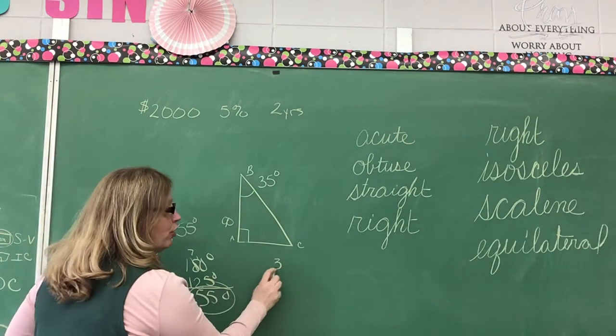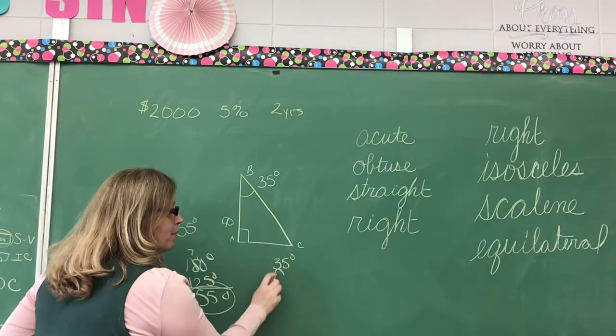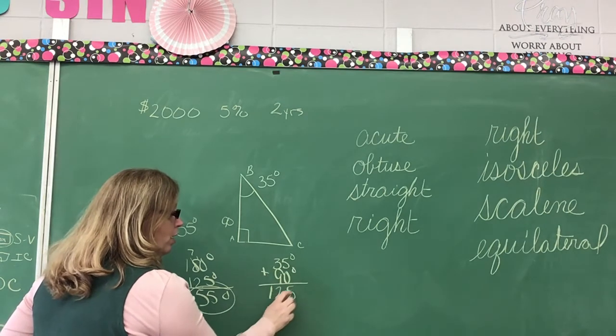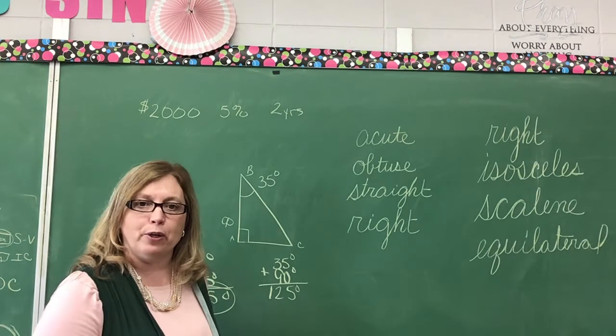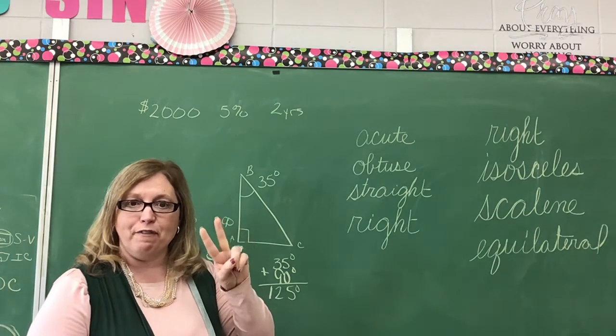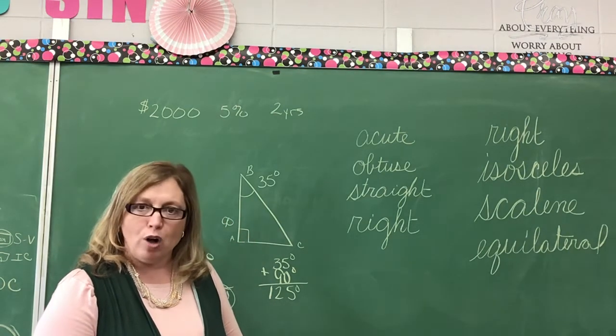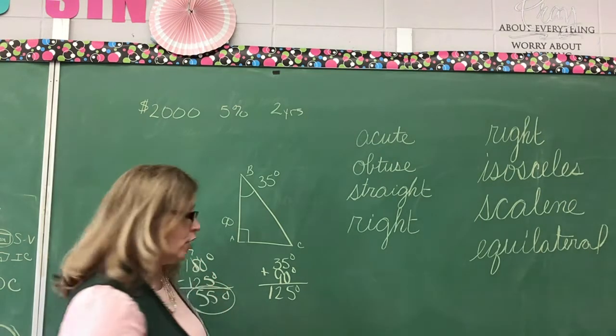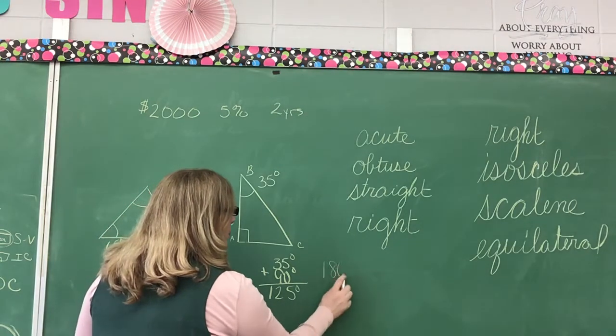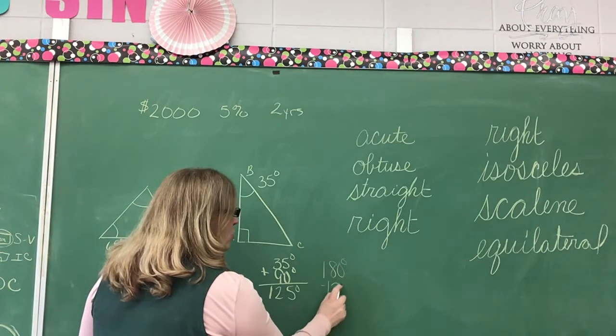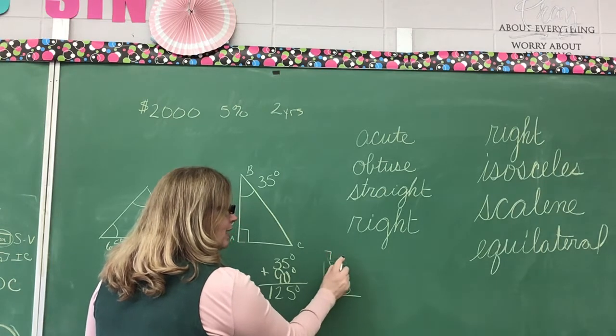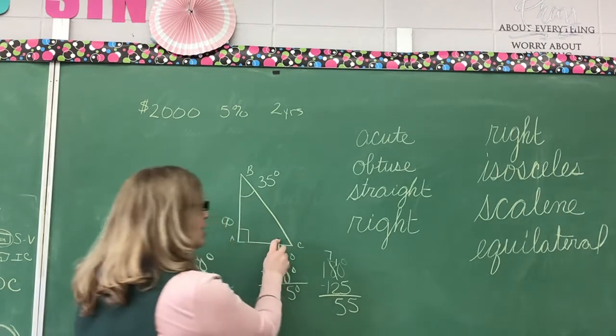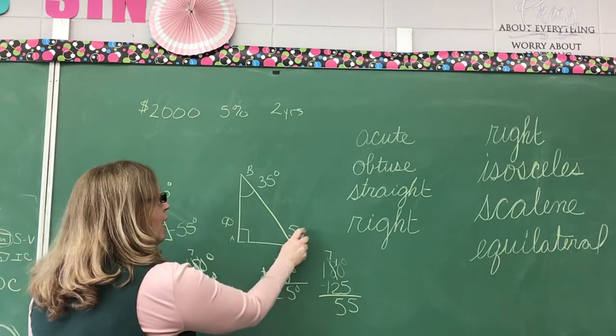So now I can say 35 degrees plus 90 degrees. When I add them together, I get 125 degrees. What do I do? Because it goes back to the second fact that I know. What's the second fact? All triangles, when you add the sums of a triangle, the sum is 180 degrees. 180 degrees minus 125, we're going to mark this out, make it 7. 10 minus 5 is 5. 7 minus 2 is 5. This angle is 55 degrees.